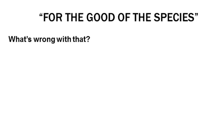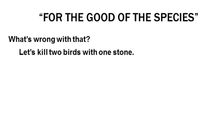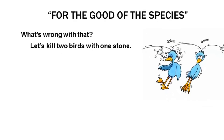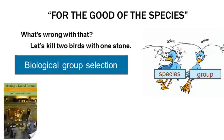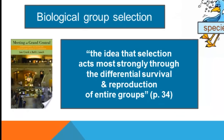Let's start with the argument that things happen for the good of the species — that evolution is all about the good of the species. Rather than going over arguments for the good of the species and then for the good of the group separately, we're going to tackle them both at once. This is called biological group selection, defined as the idea that selection acts most strongly through the differential survival and reproduction of entire groups. We could simply substitute 'species' and it would be biological species selection.